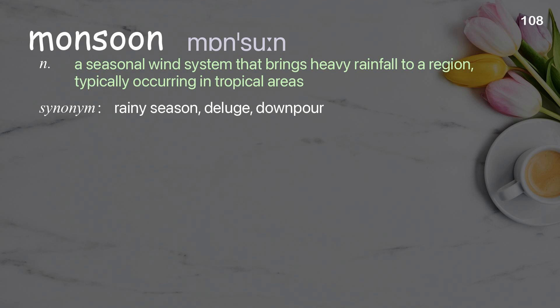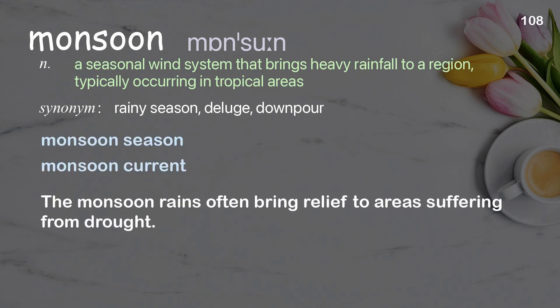Monsoon. A seasonal wind system that brings heavy rainfall to a region, typically occurring in tropical areas. Examples: monsoon season, monsoon current. The monsoon rains often bring relief to areas suffering from drought.